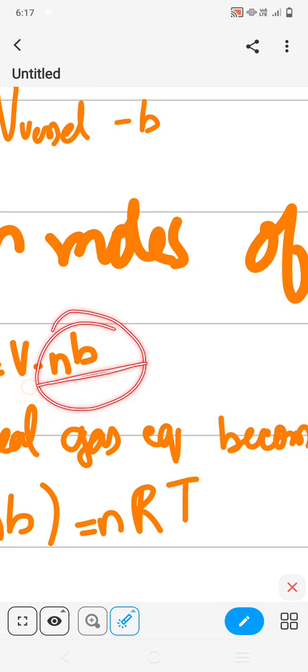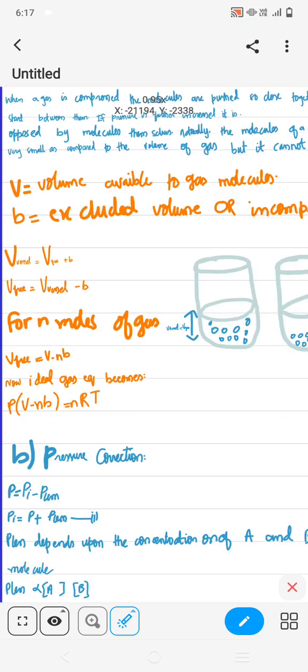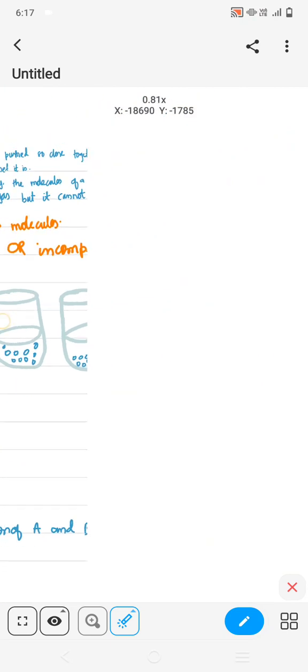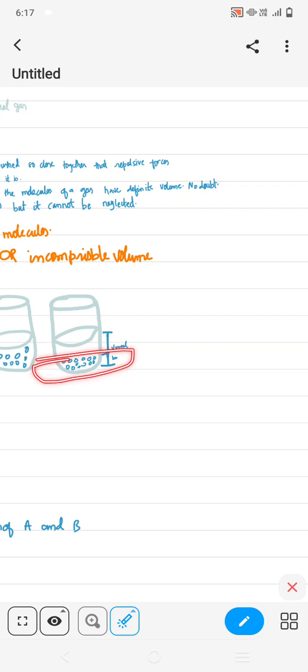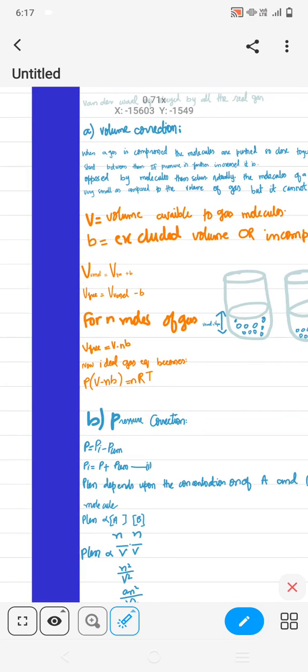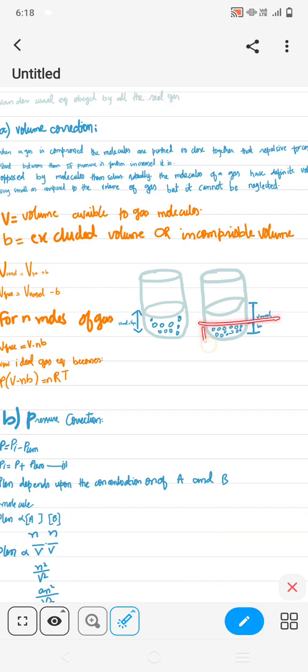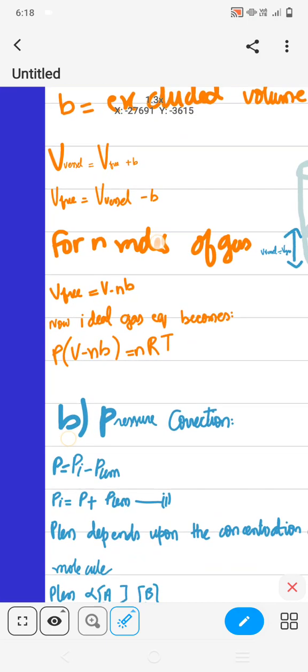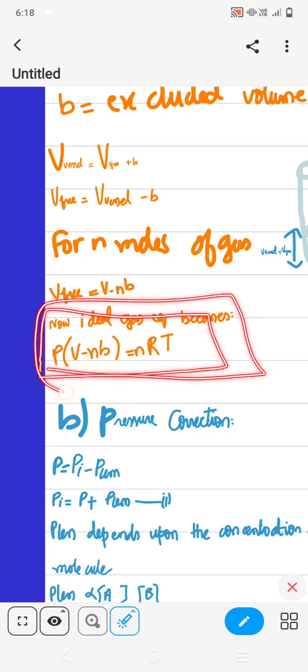We will use ideal gas equation this way: V minus nB. In ideal gas equation there is no volume, we will neglect. But now it means there is volume that is not negligible in any gas. The volume is occupied by the molecules. This is the equation of the volume of the Van der Waals equation.